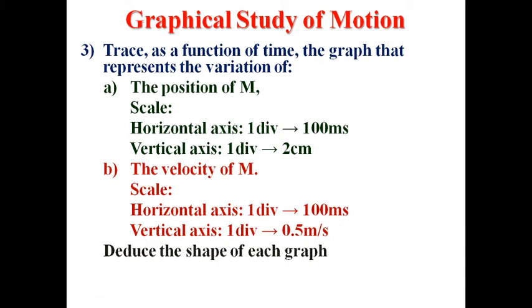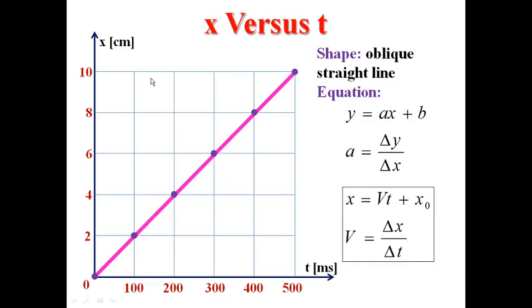Now trace the graphs of X and V versus time. First, the graph of X. If we plot the points, we get an oblique straight line. The shape of the graph for a uniform rectilinear motion: oblique straight line. Here it doesn't matter if it's decreasing or increasing, or if it's passing through the origin or not. What matters is that it's an oblique straight line. If the graph of X versus T is given and its shape is an oblique straight line, the motion is URM.